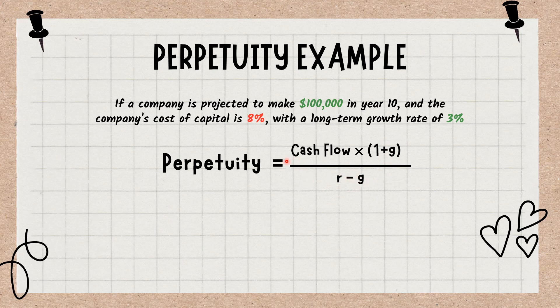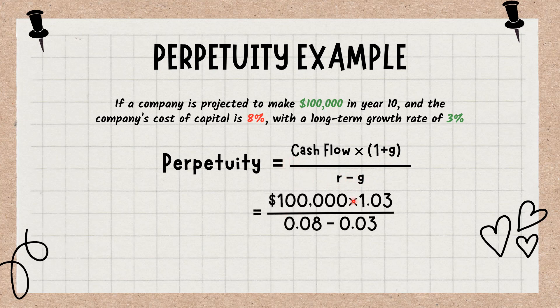So here: $100,000 multiplied by 1 plus 1.03, divided by 0.08 minus 0.03. That equals $2.06 million.